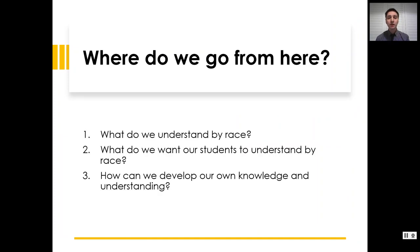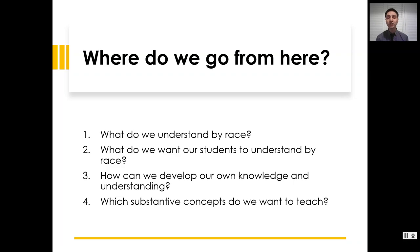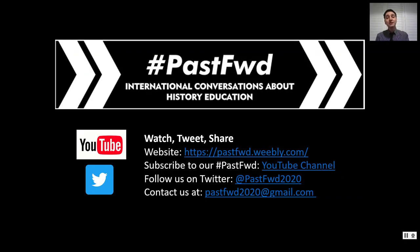So where do we go from here? First, we need to clarify what we understand by race and what we want our students to understand by race — and crucially, how we develop our own knowledge and transmit it effectively to students. This also raises a wider question of what substantive concepts we want to teach. Race is one, but there are others — concepts such as gender, nation, and empire — all of which can be broken down more explicitly to enable students to challenge the structures and types of thought they encounter on a day-to-day level. I hope that has been of some interest. Thank you very much for your attention.